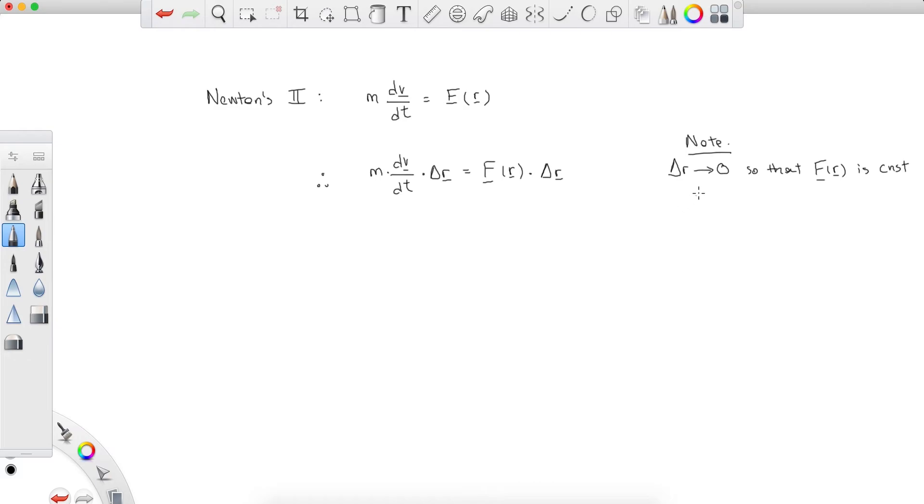So we've taken the dot product with delta r. Now what can we do? Remember, again, from kinematics that delta r is equal to v times delta t. So I'm going to rewrite this part right here. So I get m dv/dt dot product v delta t equals F(r) dot product delta r.